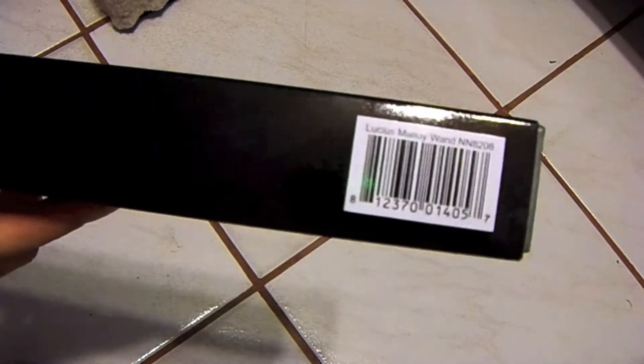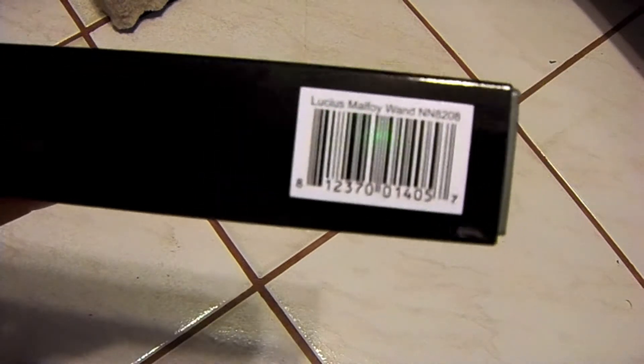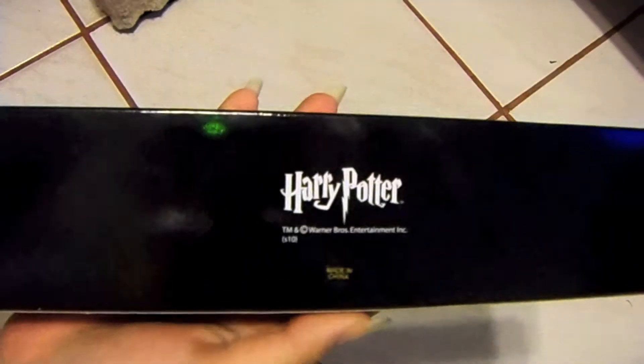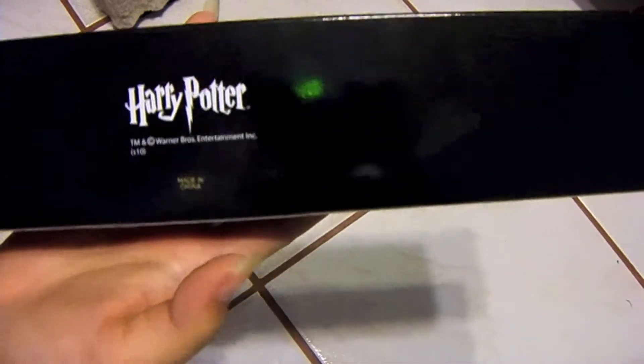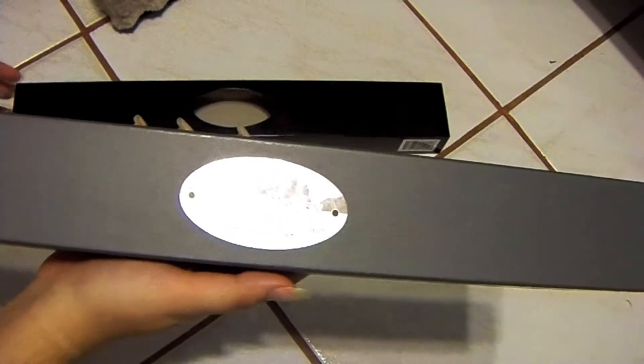So it comes in a black sleeve. Here's the size, it says Lucius Malfoy wand and the item number. The bottom says Harry Potter made in China and TM Warner Brothers Entertainment. Slide it out, it comes in a grey box.